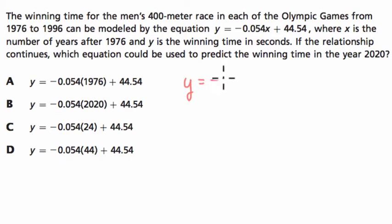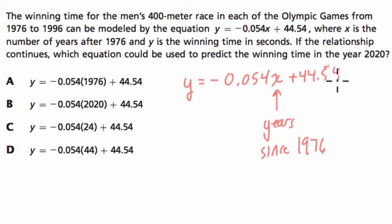So y equals negative 0.054x, x is the years since 1976 plus 44.54, and y is the winning time.